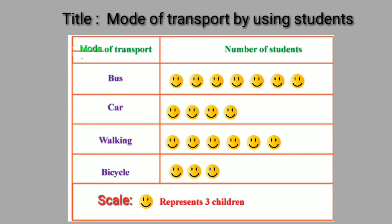Students, kitne children bus se aate hai? Seven pictures hain, aur ek picture three children show karta hai, isliye seven times three equals twenty-one children came by bus. Twelve children came by car. Walking mein kitne pictures hai? Six — so six threes are eighteen children chalke aate hai. Bicycle mein teen pictures hain, so three threes are nine — nine children bicycle use karte hai.